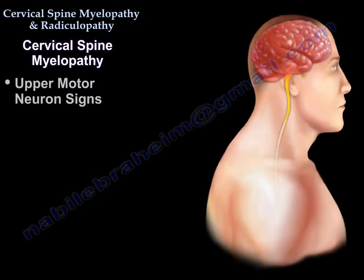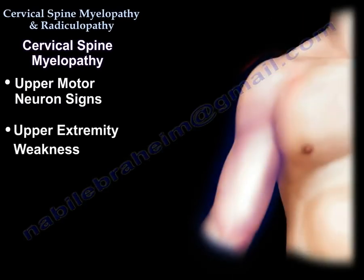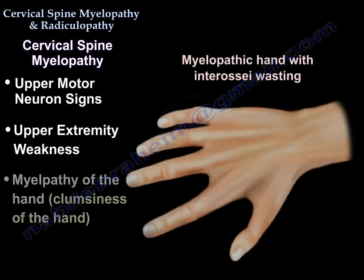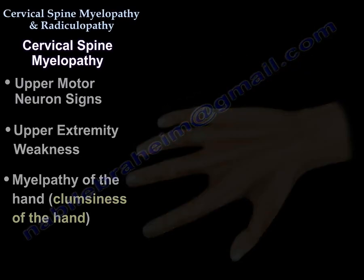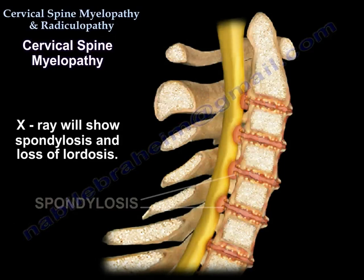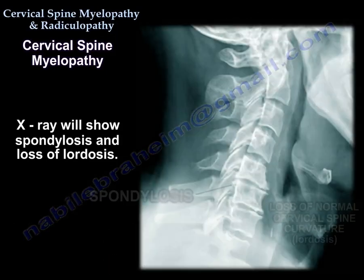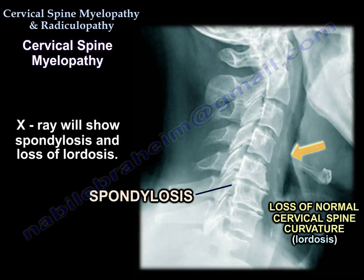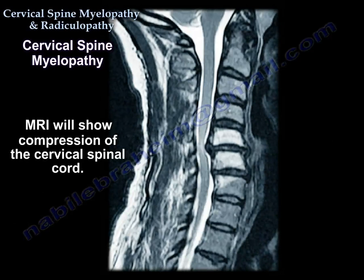You will also have upper motor neuron signs, upper extremity weakness, and the hands are clumsy — myelopathy of the hand. The x-ray will show spondylosis and loss of lordosis. MRI will show compression of the cervical spinal cord.